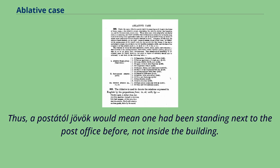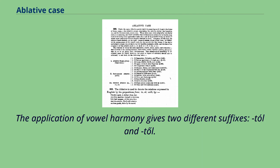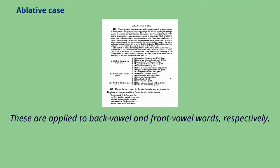When the case is used to refer to the origin of a possible act or event, the act or event may be implied while not explicitly stated — such as Meg foglak védeni a rablótól, meaning 'I will defend you from the robber.' The application of vowel harmony gives two different suffixes, -tól and -től, applied to back vowel and front vowel words respectively.